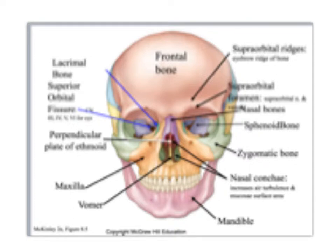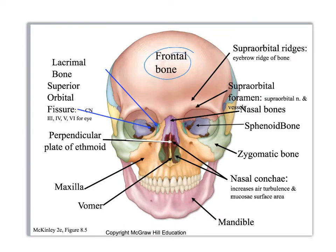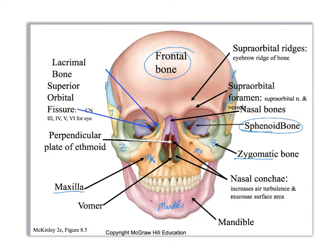Here we are with an anterior view of the skull. You can see your frontal bone, a little bit of the parietal, the temporal, your zygomatic, and your maxilla. Down here is your mandible. You can also see bits of the sphenoid bone forming the eye orbit. The zygomatic forms part of the eye orbit, as does the frontal, the maxilla, lacrimal, and also the ethmoid, which is more difficult to see in this picture.